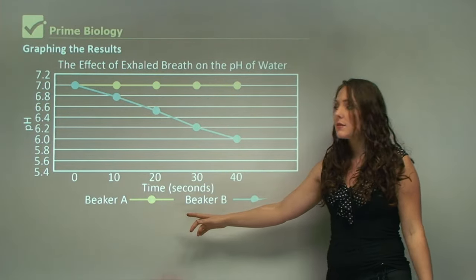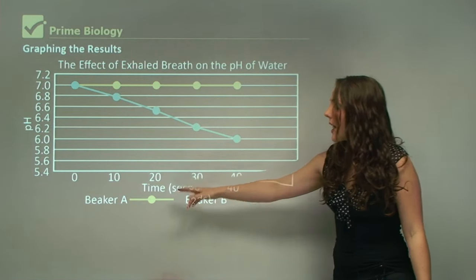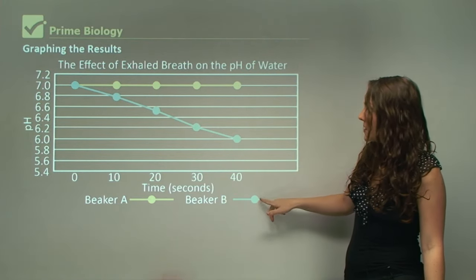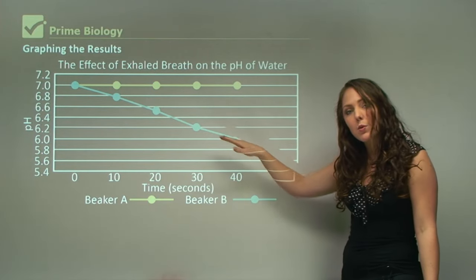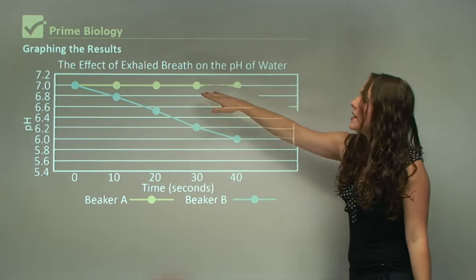Beaker A, these are swapped, and you can see that beaker B should be beaker A. Because beaker A is the one that declined, and beaker B stayed the same.